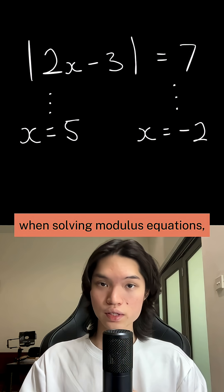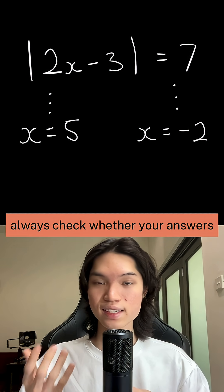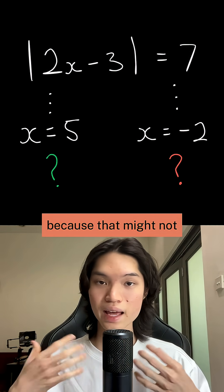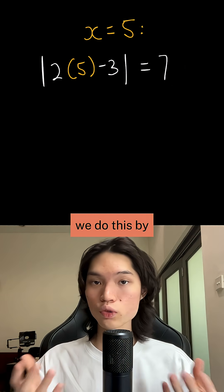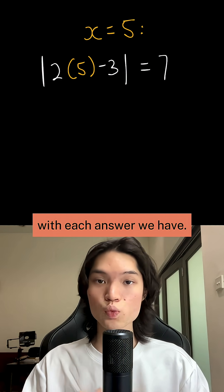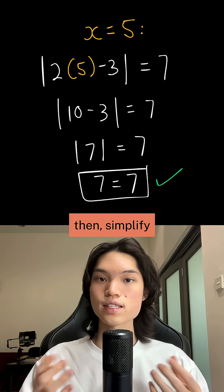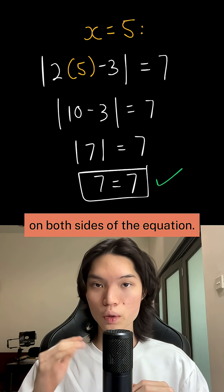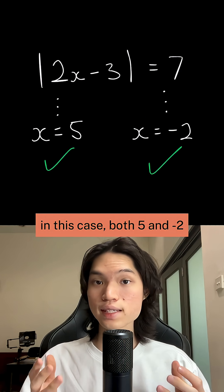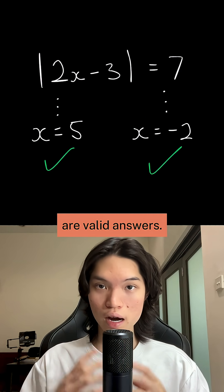When solving modulus equations, always check whether your answers are valid solutions because that might not always be the case. We do this by replacing the original x with each answer we have. Then simplify until you see the same value on both sides of the equation. In this case, both 5 and negative 2 are valid answers.